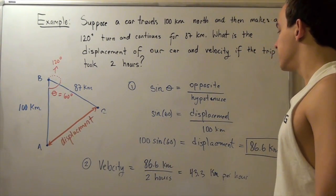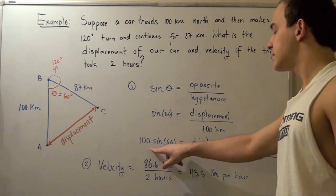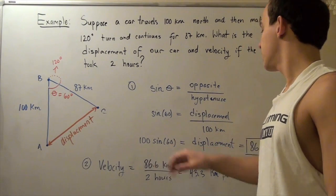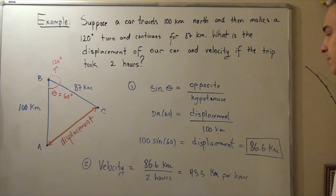We bring over our denominator. So, 100 times sine 60 equals our displacement and we plug this into our calculator and we get 86.6 kilometers.